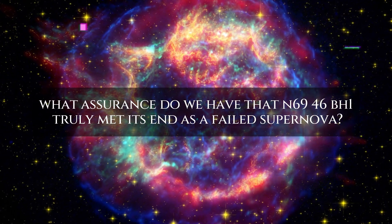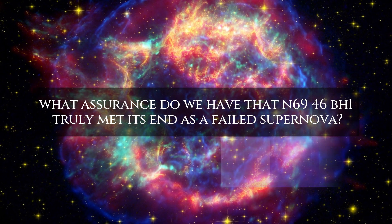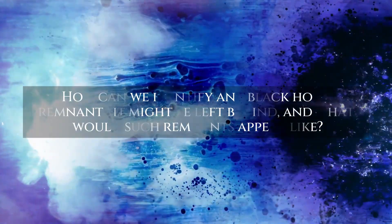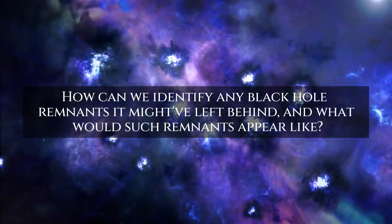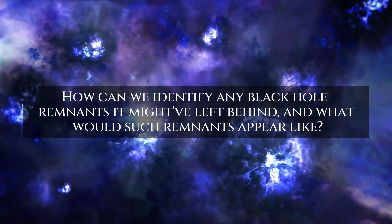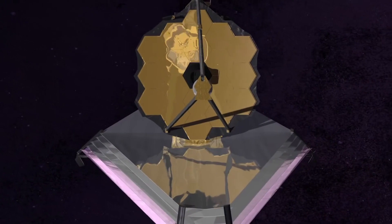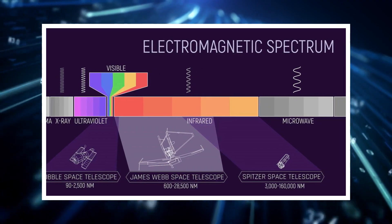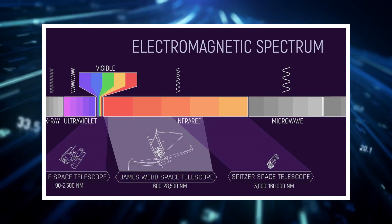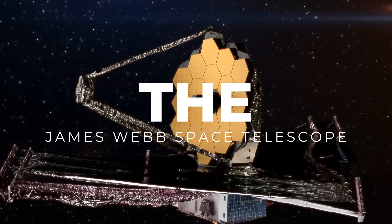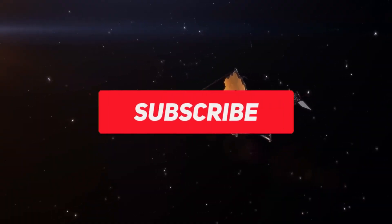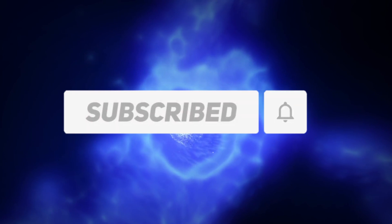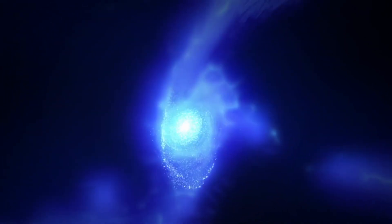So, what assurance do we have that N6946BH1 truly met its end as a failed supernova? How can we identify any black hole remnants it might have left behind? And what would such remnants appear like? The answers lie in a specialized telescope capable of observing the mid-infrared range of the electromagnetic spectrum: enter the James Webb Space Telescope. It's perfect for such inquiries as it can delve deeper into cosmic surroundings, revealing concealed emissions from stars or their remnants.